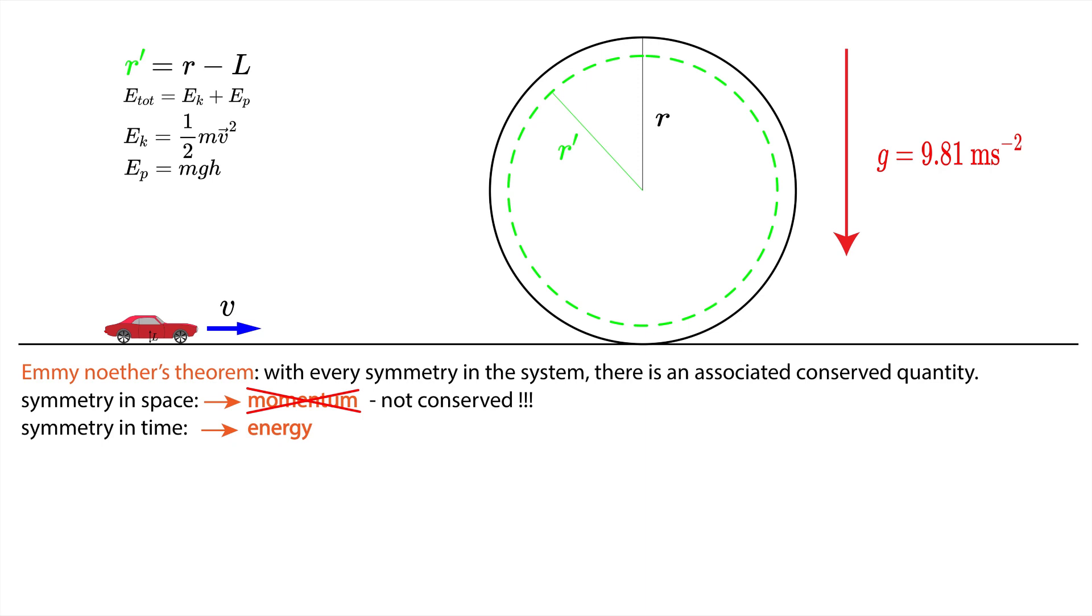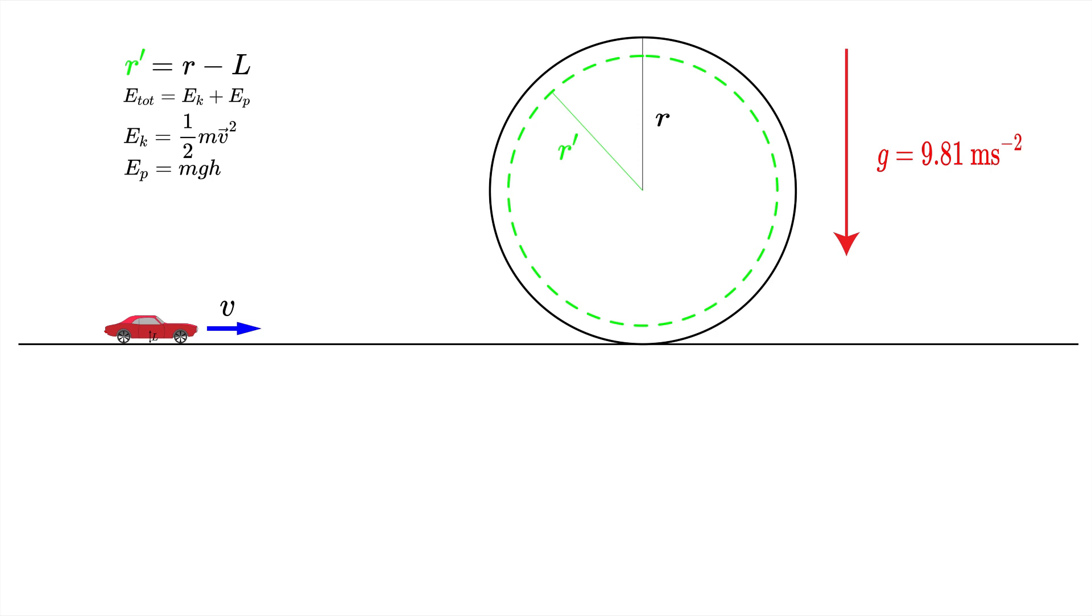In our scenario where g is constant, the energy is conserved, which means that at any time the car has always the same amount of total energy. This is very powerful because on the ground the total energy of our car is just its kinetic energy, because h is equal to zero on the ground by our definition.